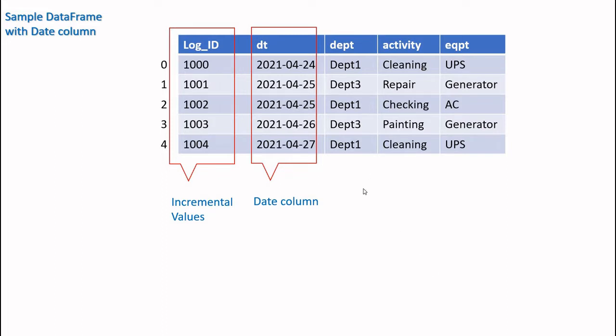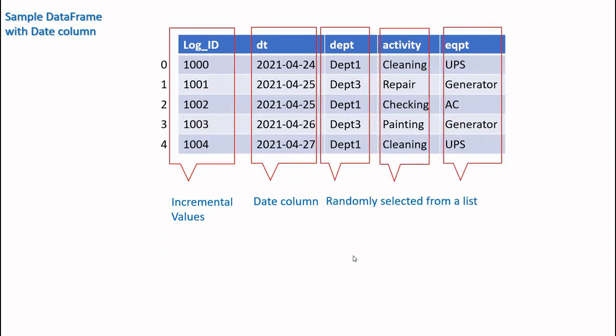So you can see the subsequent dates. Similarly, all three columns are department, activity, and equipment. The department is limited to 4 or 5 departments. Activity is also limited. But from these lists, data is randomly taken to build up the rows. If I want 100 rows in this DataFrame, the department is randomly picked from the 5 sample values and fills the 100 rows. The same thing happens with activity and equipment. I have a limited 5 to 6 equipments, but when creating a large DataFrame of 1000, they are filled randomly from those 5.